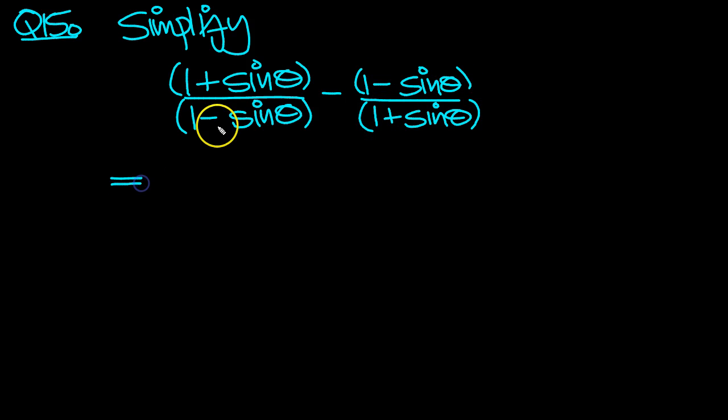So let's put brackets around the terms because there's more than one term in each constituent part. So cross-multiply: 1 plus sin theta squared, that object squared, minus 1 minus sin theta, that object squared.